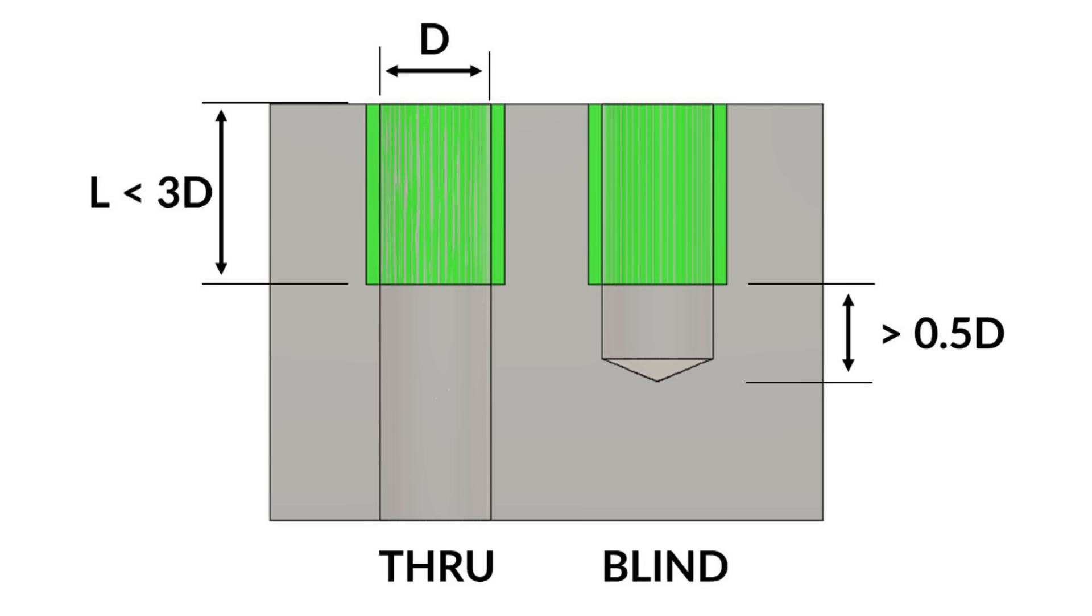For tapped holes, a through hole is always preferred to a blind hole as it allows the chips from the cutting threads to be evacuated. Don't tap a hole any deeper than 3 times the diameter. There isn't any increase in strength past this point, it just gets more difficult to manufacture and to thread in the fastener.